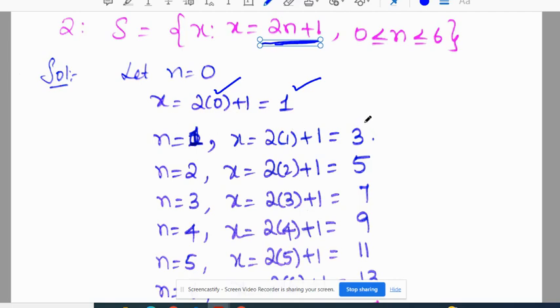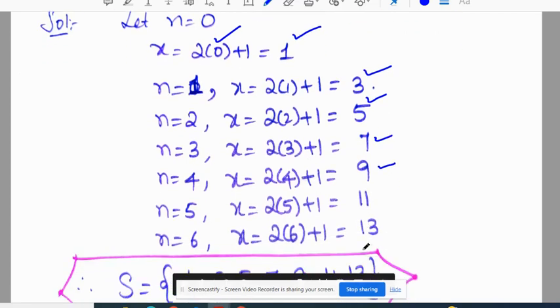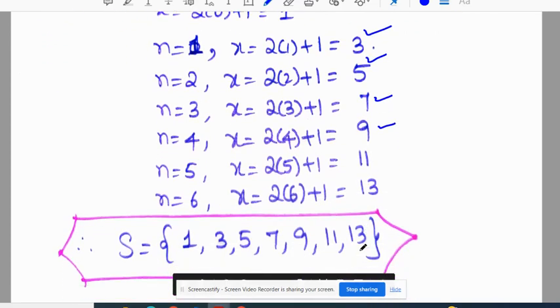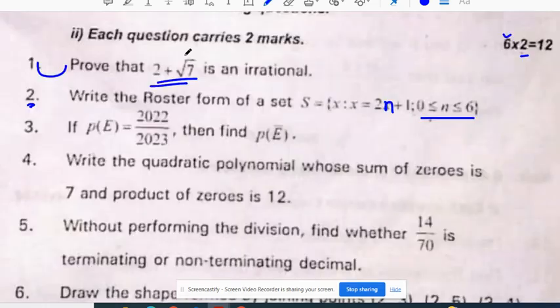We got 1. N is equal to 1, X is equal to 3. N is equal to 2, X is equal to 5. N is equal to 3, X is equal to 7. N is equal to 4, X is equal to 9. N is equal to 5, X is equal to 11. N is equal to 6, X is equal to 13. So S is equal to {1, 3, 5, 7, 9, 11, 13} in rooster form.